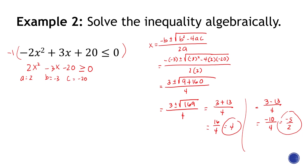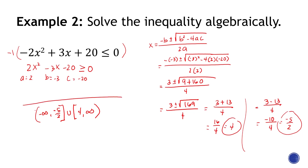Now we convert to interval notation. Since the inequality is greater than or equal to, we use brackets. The answer is: negative infinity to negative 5 over 2, with a bracket, union of positive 4 to positive infinity. That's our answer.